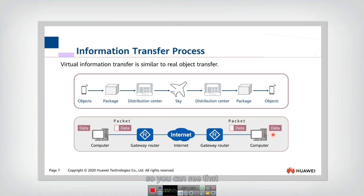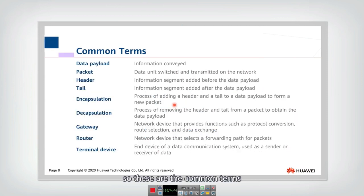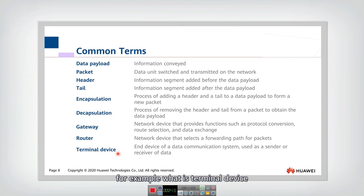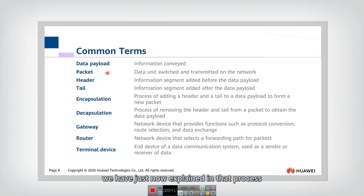You can see that this process is very similar to a real-world object delivery. These are the common terms we have just introduced. You can refer to these words: what is a terminal device — that's a computer; what is a router; what is a gateway; what is encapsulation and decapsulation; and what is a data payload — all of which we have just explained in that process.